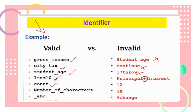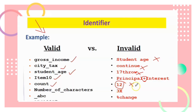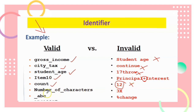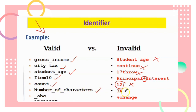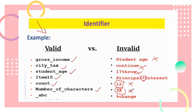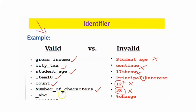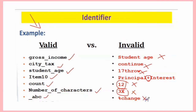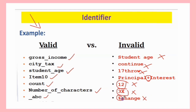Remember: the first character must be a letter, an underscore, or a dollar sign. 'number_of_characters' is valid. An identifier that begins with a digit is invalid — it must not begin with a digit. An identifier using a percentage sign is also invalid.